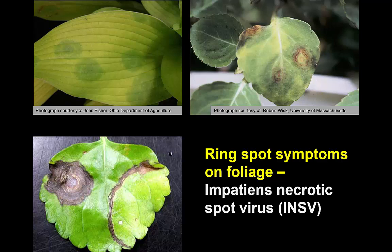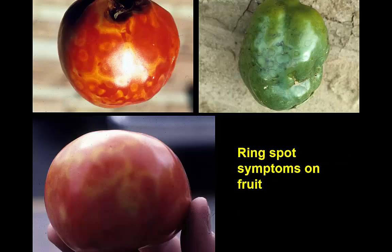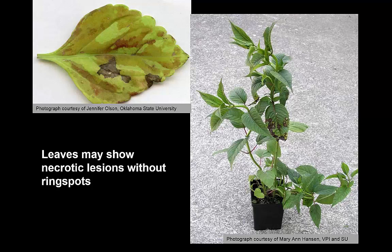Here are some ring spot symptoms on leaves of ornamental plants produced by impatiens necrotic spot. Impatiens necrotic spot is primarily an issue on plants we grow for ornamentals. Tomato spotted wilt goes to an extremely wide range of crops, including most vegetables — not just tomatoes. There are very few plants that cannot be affected by tomato spotted wilt. We can also see ring spot symptoms on fruit; this is tomato spotted wilt virus. Symptoms can be fairly dramatic on a tomato, or quite subtle — one example was actually a tomato purchased at a supermarket — and you can see ring spot symptoms on the fruit of a pepper.